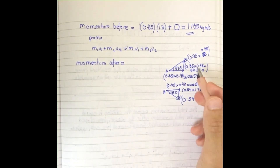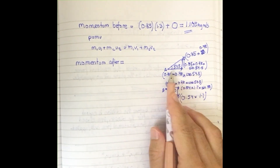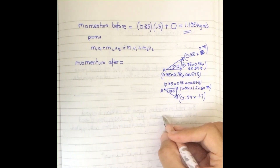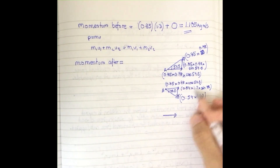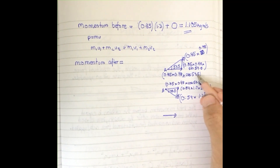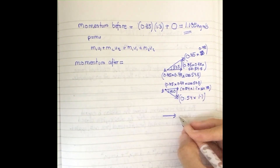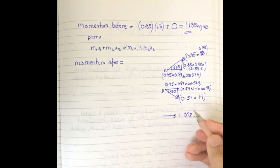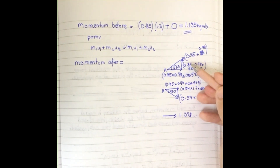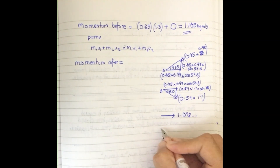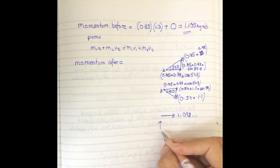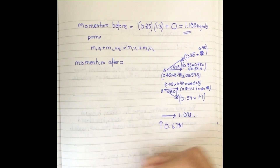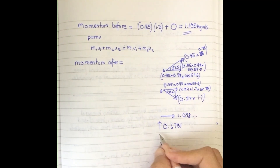Both arrows for A and B are pointing to the right, so I add their horizontal (cosine) components together. Adding both cosine values gives me 1.098 kg·m/s in the horizontal direction. Now looking at the vertical components, they are going in opposite directions — A is going up and B is going down, so I need to calculate each separately.